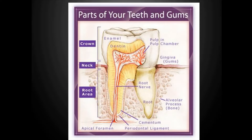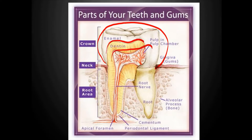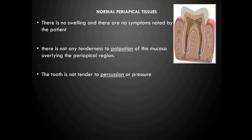Before we proceed with the diseases of pulp and peri-apex, let's understand the different parts of our teeth and gums. The crown has an outer layer of enamel, then dentin, and below that is the pulp. The pulp extends into the root; adjacent to the pulp canal there is dentin and then a layer of cementum. The tooth is embedded in the alveolar bone socket with the help of periodontal ligament fibers.